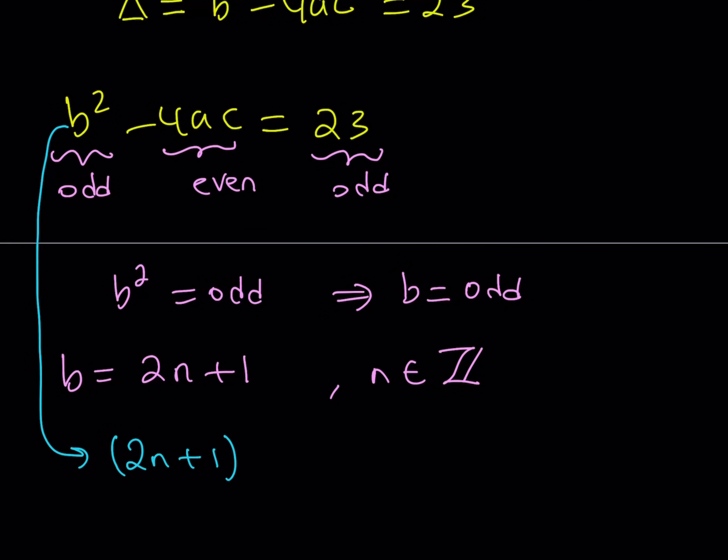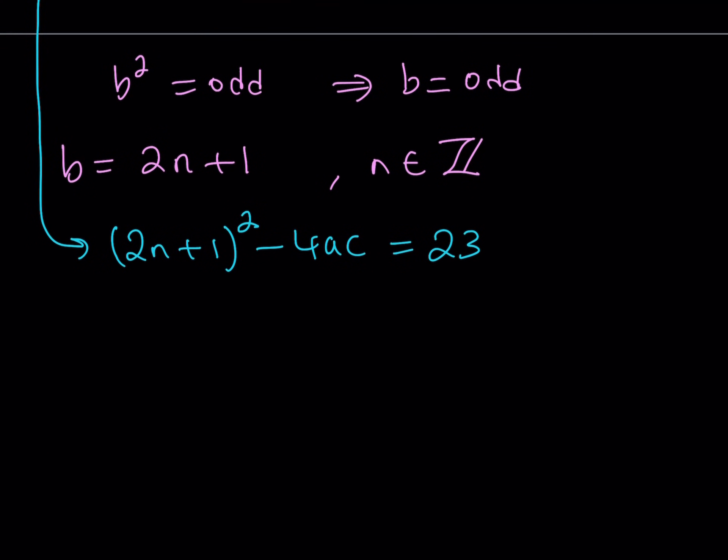That gives me 2n plus 1 quantity squared minus 4ac equals 23. And again, n is an integer, a is an integer, c is an integer. So here, everything, every variable represents an integer. Let's go ahead and expand 2n plus 1. It is 4n squared plus 4n plus 1 minus 4ac equals 23.